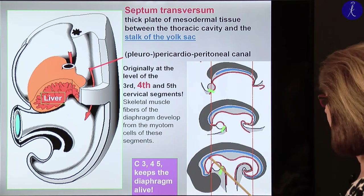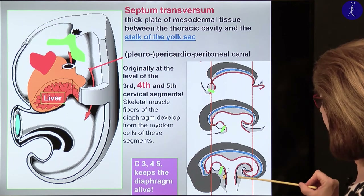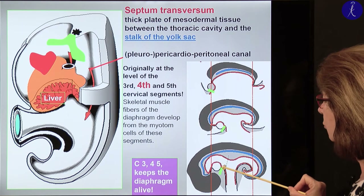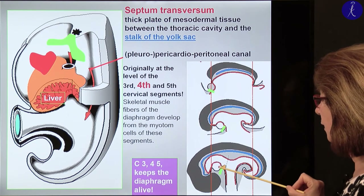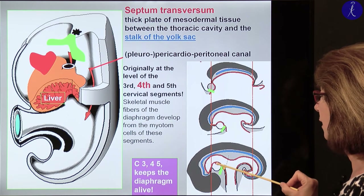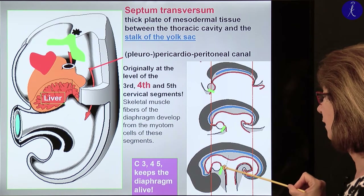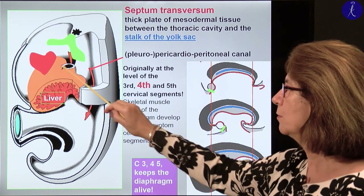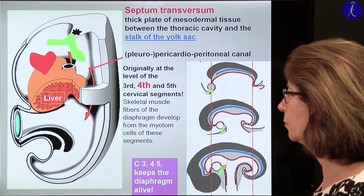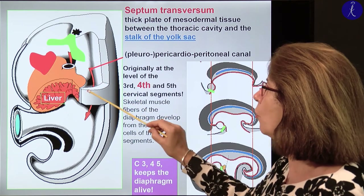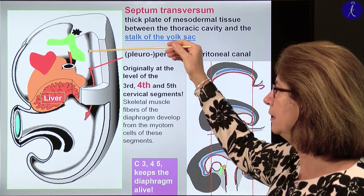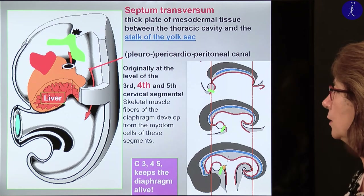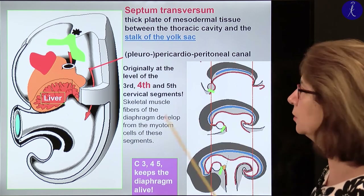From here the septum transversum pushes backward, but it doesn't reach the posterior body wall — it leaves an opening. With that, the body cavities in the upper and lower regions are in contact with each other. Nowadays this is called the pericardial peritoneal canal. The former name was pleuropericardial peritoneal canal, which made more sense because it tells you that above you will have the pleuropericardial cavity and below the peritoneal cavity.